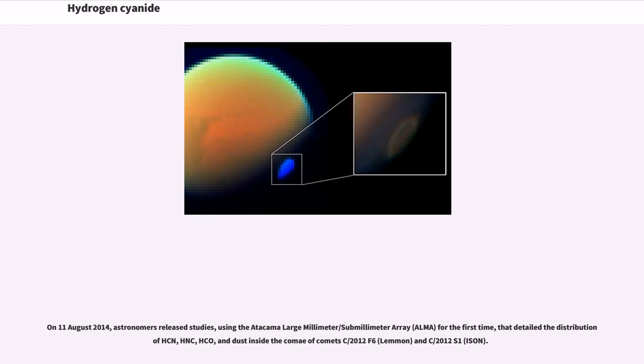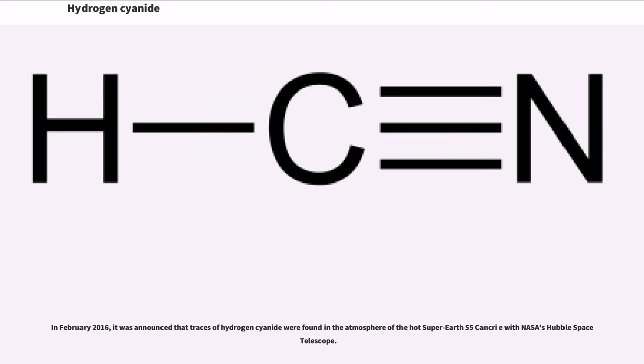On August 11, 2014, astronomers released studies using the Atacama Large Millimeter/Submillimeter Array for the first time that detailed the distribution of HCN, HNC, H2CO, and dust inside the comae of comet C/2012 F6 and C/2012 S1. In February 2016, it was announced that traces of hydrogen cyanide were found in the atmosphere of the hot super-Earth 55 Cancri e with NASA's Hubble Space Telescope.